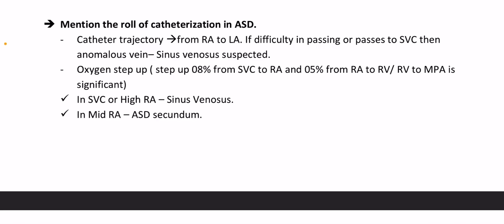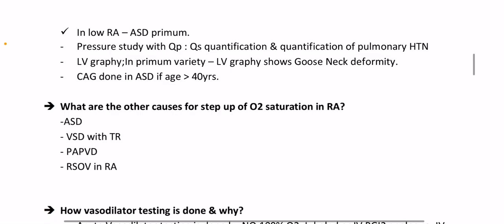What is the role of cardiac catheterization in ASD? Catheter trajectory from RA to LA; if difficulty in passing or the catheter passes to the superior vena cava, then anomalous pulmonary veins or sinus venosus type is suspected. Oxygen step-up: 8% from SVC to RA and 5% from RA to RV or RV to MPA is significant. Step-up location: superior vena cava or high RA suggests sinus venosus type; mid-RA suggests secundum ASD; low RA suggests primum ASD.